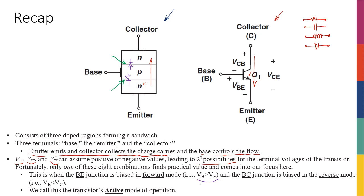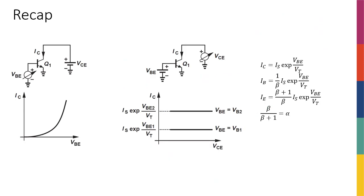We want VB to be greater than VE, and at the same time we want VB to be smaller than VC. We call this the active mode of operation. Active mode simply means that V_BE is greater than zero and V_BC is less than zero. When the transistor is in active mode, it is on, and we can find the expressions for the collector current, emitter current, and base current.